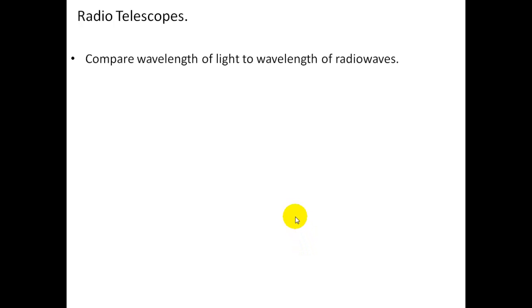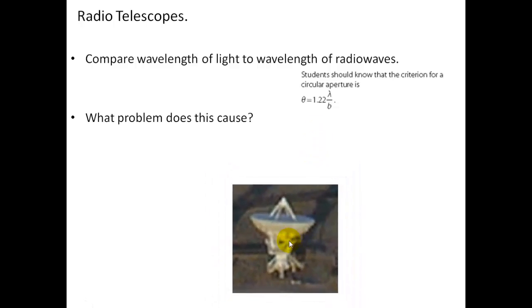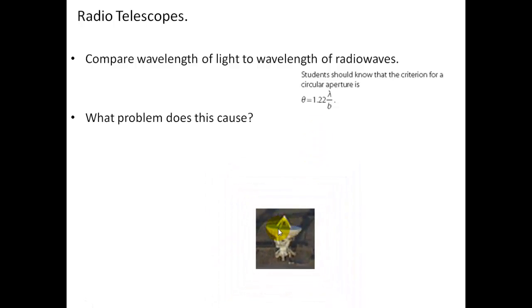Radio telescopes: compare the wavelength of light to wavelength of radio waves. We know that light is much shorter than radio waves, so we're dealing with radiation which is a very long wavelength. So it makes it very difficult. You cannot resolve two images with a normal size telescope because the angle lambda is so large for a radio wave that the objects will have to be very far apart. However, if you have a large aperture then you can resolve them. For example, here we have a large radio telescope.